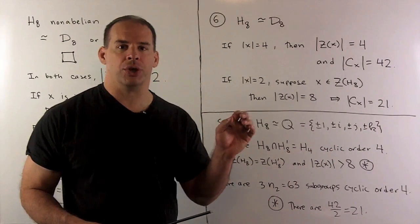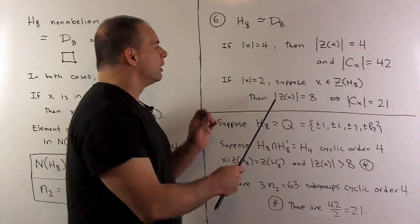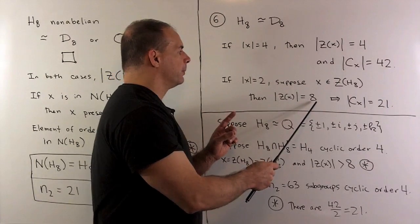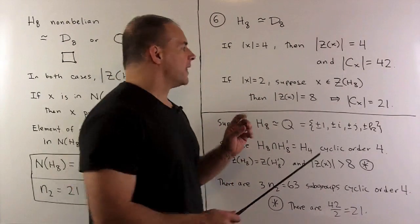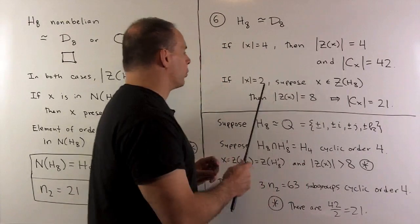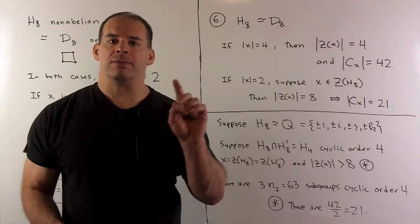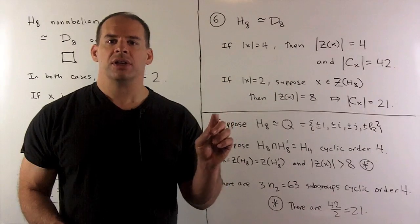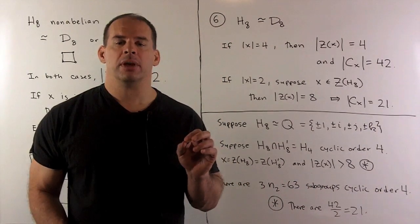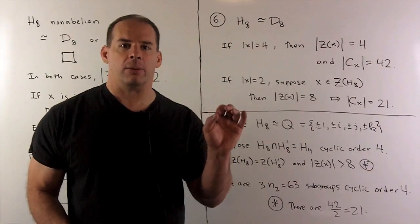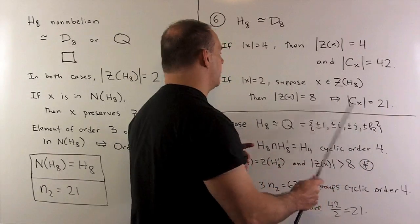Considering an element of order two in the center of H8: the order of its centralizer is eight (again, a three or seven order element there gives a contradiction). So the conjugacy class for this element of order two has 21 elements. We have 48 elements of order seven, 56 of order three, leaving 64 spaces. We account for 42 elements of order four, 21 of order two, and one for the identity — totaling 168 elements. So there is one conjugacy class for elements of order four and one for elements of order two.